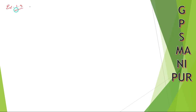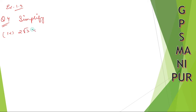Now we are dealing with exercise 1.3, equation number 4, simplify roman numeral 9. The question says simplify 2 root 2, 2 root 3 into 3 root 2. We are going to simplify this one. There is a multiplication sign over the solution.